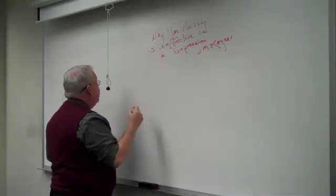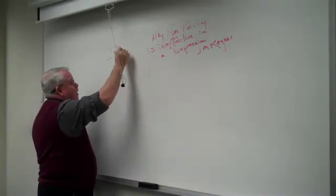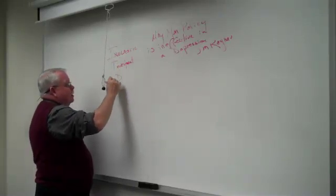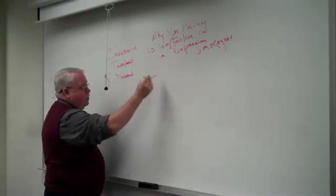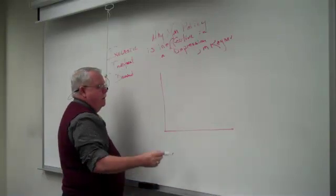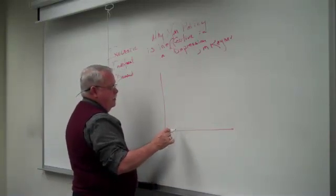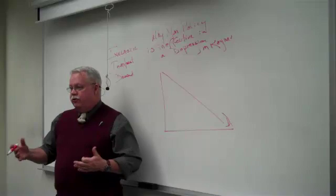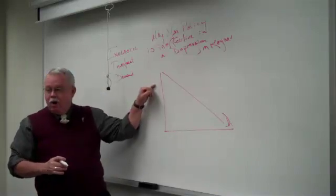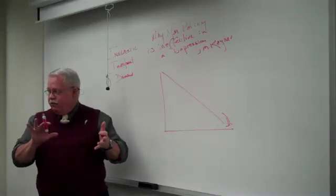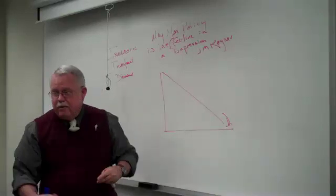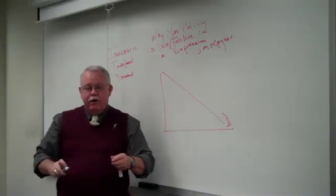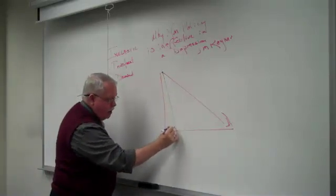The first one is called inelastic investment demand. We'll show that by going back to this loanable funds market. Here's the first demand curve we showed, Demand one. That's the demand by businesses for borrowing money, which they borrow more when interest rates are low, right? But Keynes says that when the economy slides into a deep recession or depression, unemployment is very high, customers are not coming through the doors. This curve changes shape and becomes more like D2.